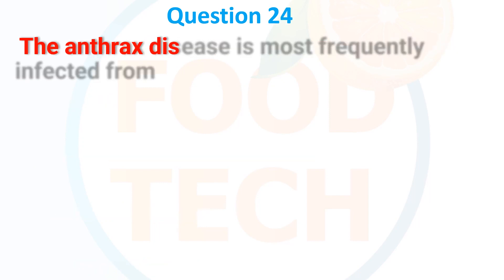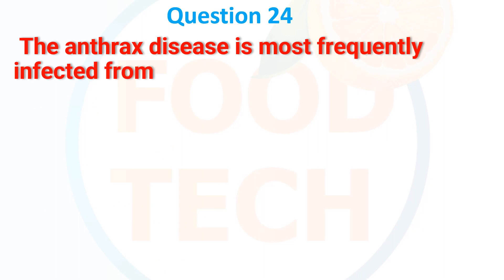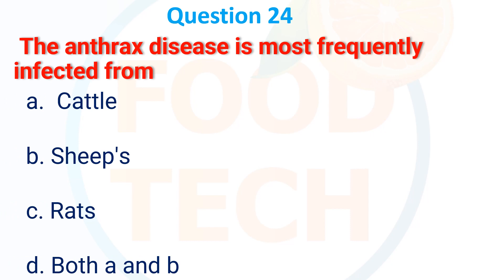Anthrax disease is most frequently infected from: A. Cattle, B. Sheep, C. Rats, D. Both A and B. The answer is D: Both A and B.